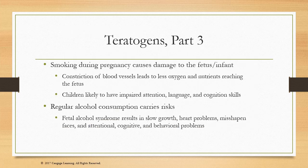Smoking is one of the most common teratogens. It constricts blood vessels leading to less oxygen and fewer nutrients reaching the fetus, and children are likely to have impaired attention, language, and cognition skills. Regular alcohol consumption carries the risk of fetal alcohol syndrome, which results in slow growth, heart problems, misshapen faces, and intellectual, cognitive, and behavioral problems. As we progress through developmental stages, think back to what the mother may have done prenatally.